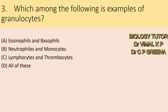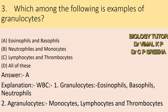Third question: which among the following are examples of granulocytes? A. Eosinophils and basophils, B. Neutrophils and monocytes, C. Lymphocytes and thrombocytes, D. All of these. Here answer is A — Eosinophils and basophils. White blood corpuscles are classified into granulocytes and agranulocytes. Granulocytes include eosinophils, basophils, and neutrophils. Agranulocytes include monocytes, lymphocytes, and thrombocytes.